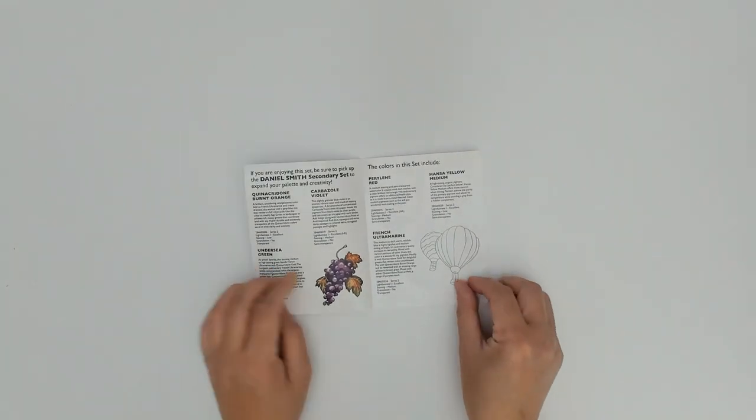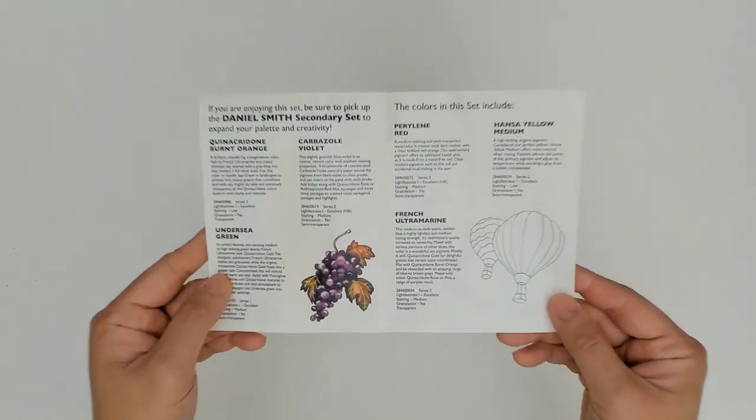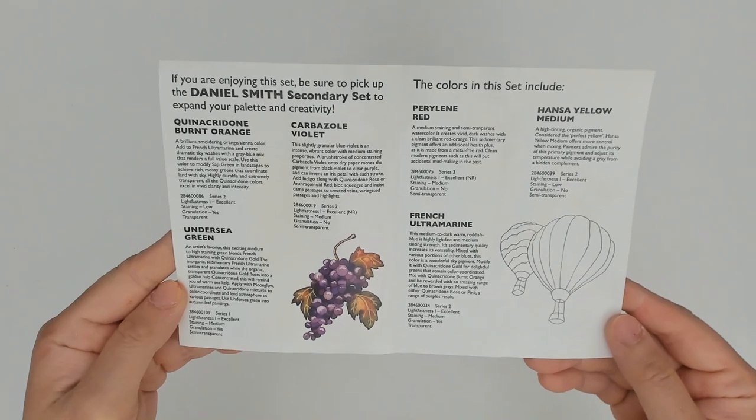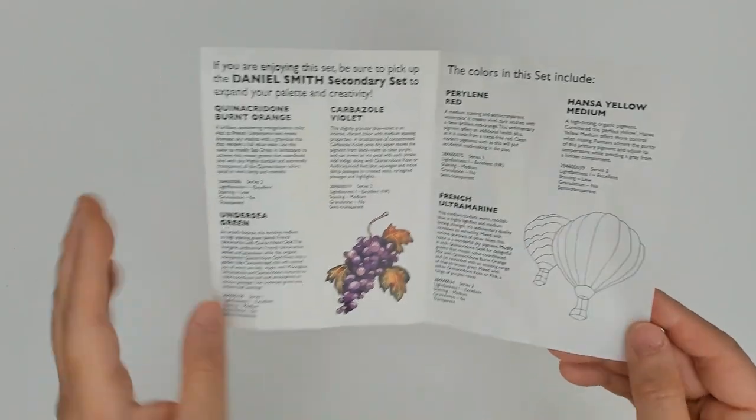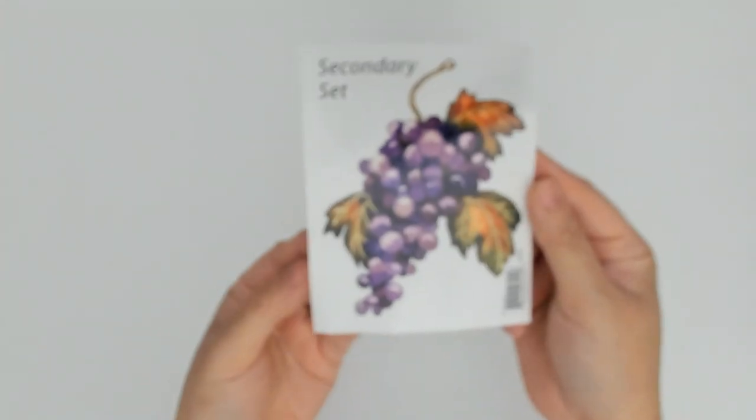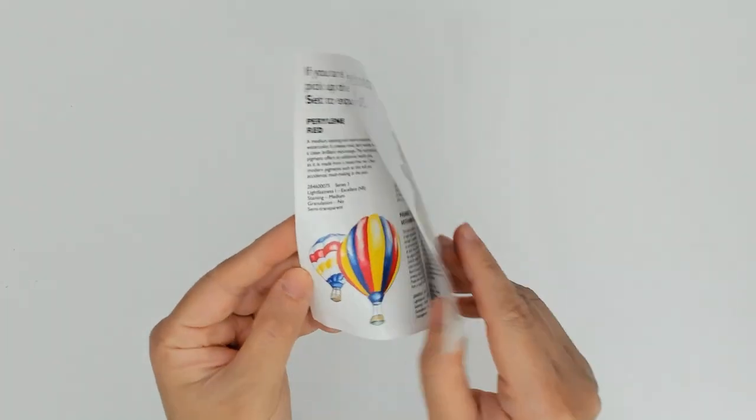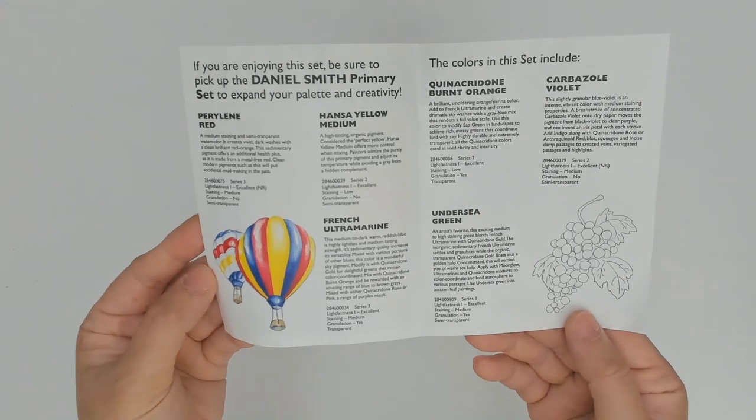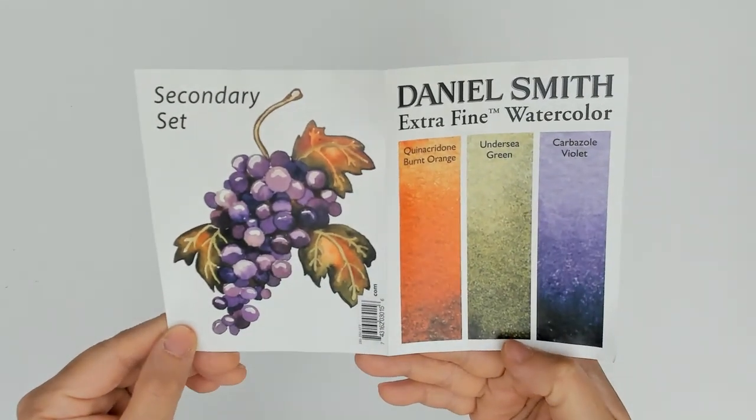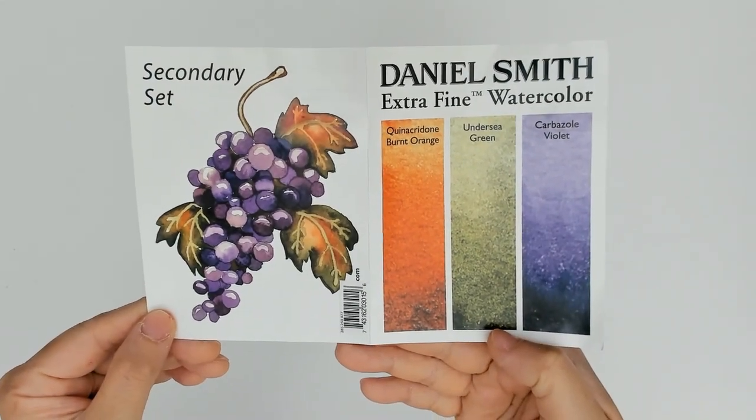Here's what the instructions look like on the inside. This one is for the primary set. This is the swatch that came from the manufacturer. Here are the descriptions for the secondary set. This is what the colors look like swatched out by the manufacturer.